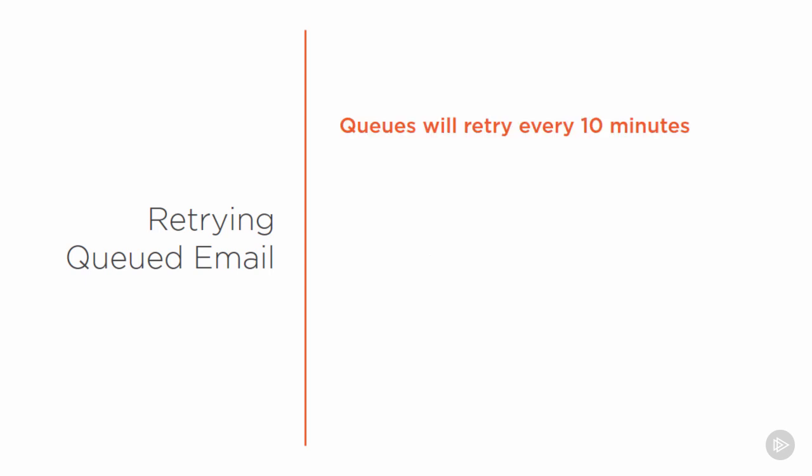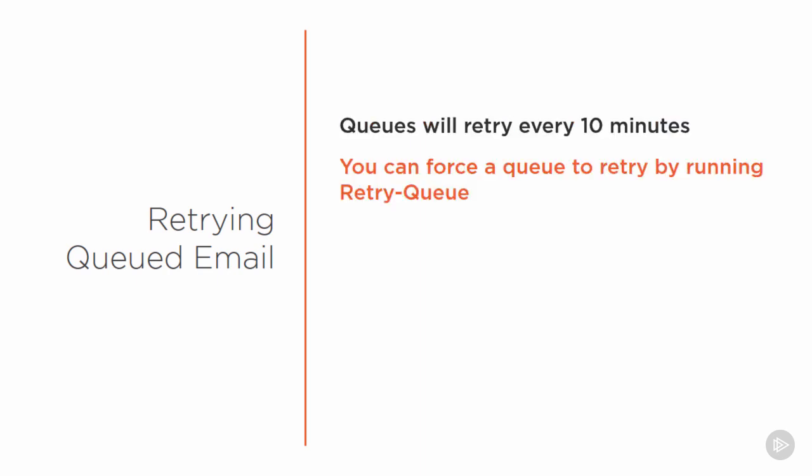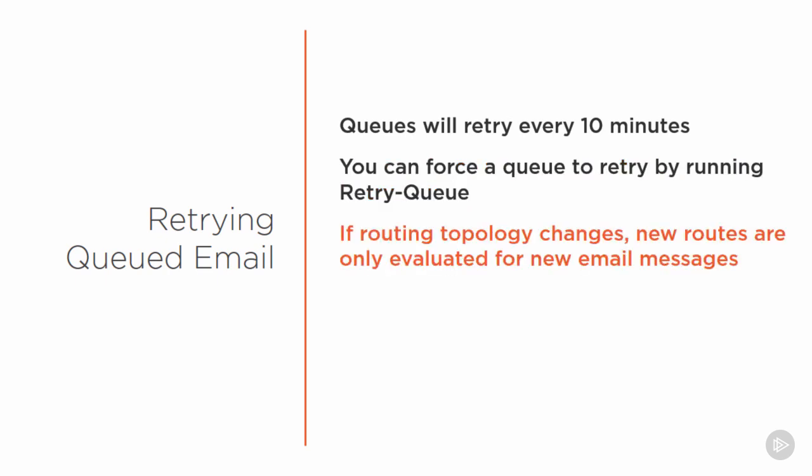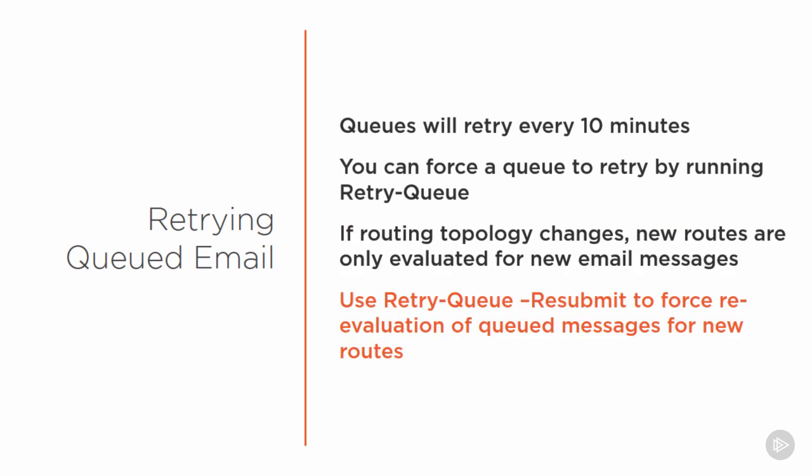Transport queues will retry every 10 minutes, or you can force a retry by running the retry queue cmdlet, which is useful if you want to speed up testing after you think you've fixed whatever problem is causing the mail to queue. But if you resolve a routing issue by establishing a new route, such as by changing a connector's cost or establishing a new connector, that will only help new mail items. The mail that's already been categorized and queued won't be re-evaluated for the new route until you run retry queue with the resubmit switch.